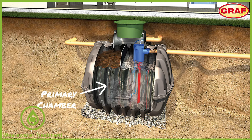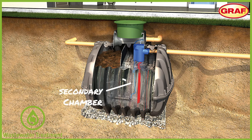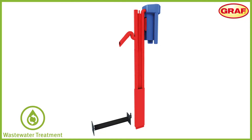The primary chamber, similar to a septic tank, will store the waste coming from the property before it moves to the secondary chamber. The secondary chamber is where the actual treatment happens.